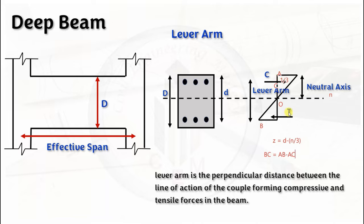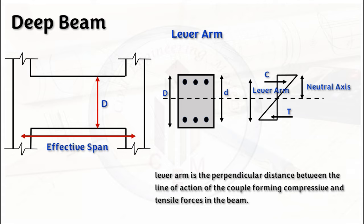This is how you calculate the lever arm for normal beams. In the case of deep beams, calculating the lever arm is more complicated, which is why IS 456 provides an empirical formula. Lever arm is a critical parameter in the design of RCC beams. It is important to accurately calculate the lever arm to ensure the beam is safe and will not fail under loads.